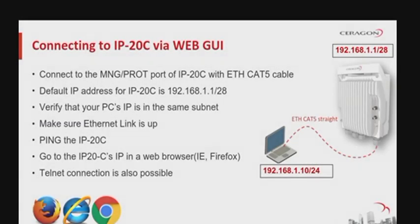In order to manage the IP20C locally via web EMS, you need to connect to the management port of the IP20C with an Ethernet CAT5 cable, check that the Ethernet link is up, and make sure that your PC's IP address belongs to the same subnet as the unit's default one, which is 192.168.1.128.